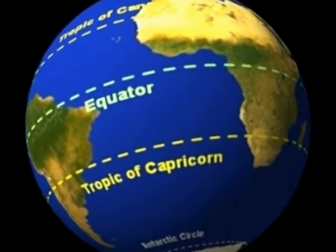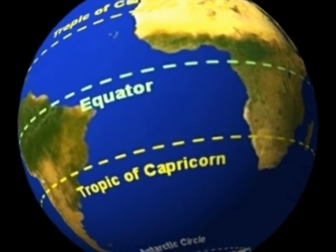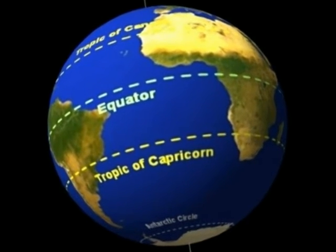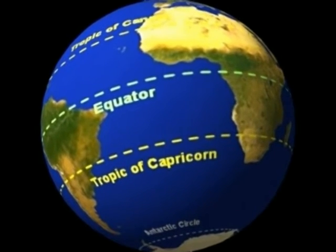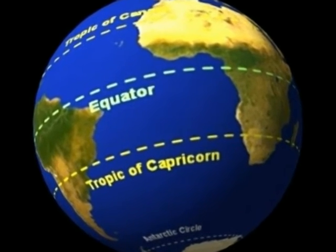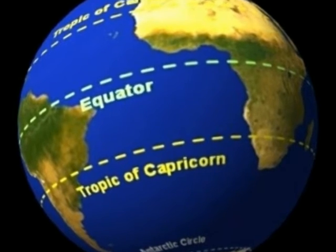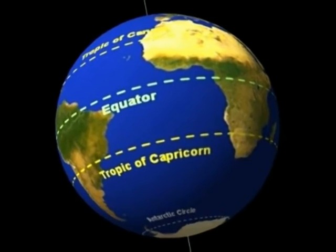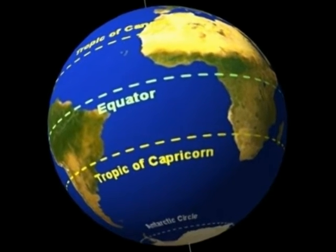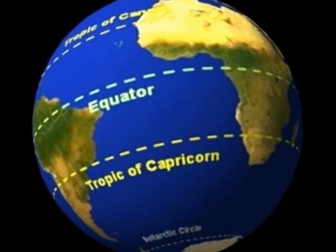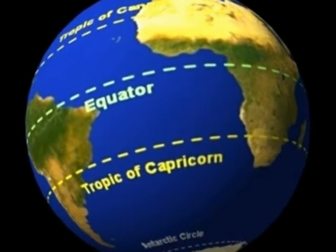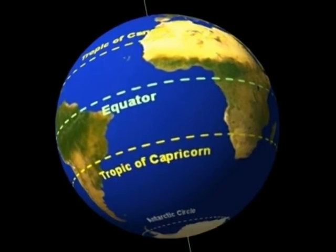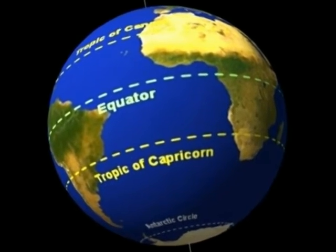Now let's go on to the third question, shall we? Uttarakhand, Uttar Pradesh, Bihar, West Bengal, and Sikkim have the most common foreign border areas with which country? Option A. China, Option B. Bhutan, Option C. Nepal, Option D. Myanmar. Your time starts now!